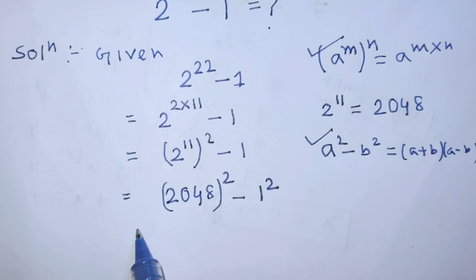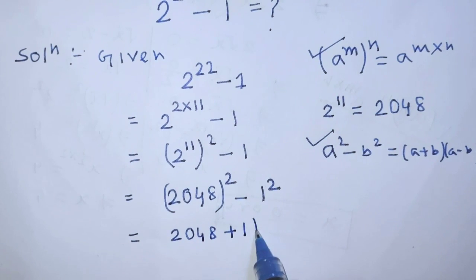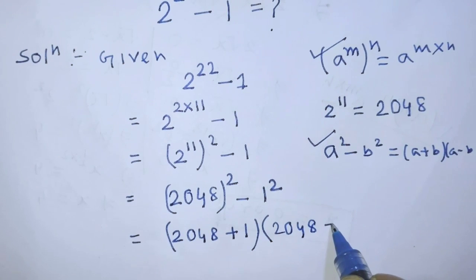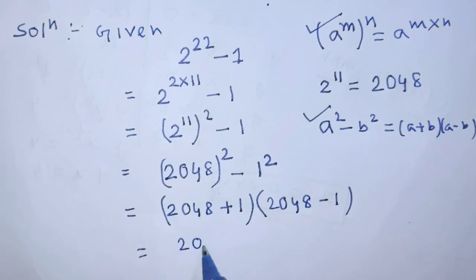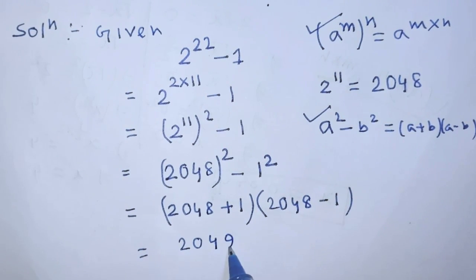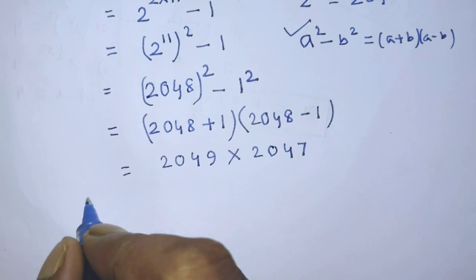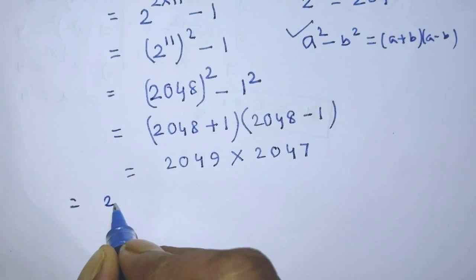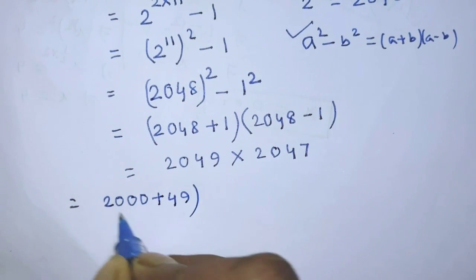According to this formula, we can write from this algebraic expression: 2048 plus 1 times 2048 minus 1, which gives us 2049 times 2047.